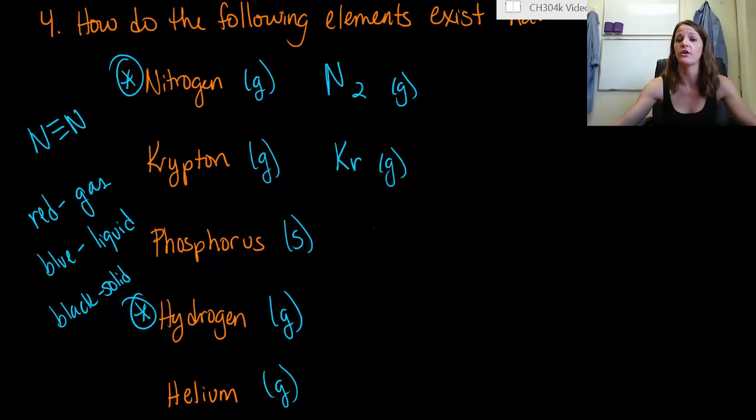Phosphorus also not a diatomic. It exists naturally by itself. So phosphorus solid. Hydrogen is a diatomic. So it's H2 and that exists as a gas. Helium is not a diatomic. So it exists just by itself. Helium gas by itself.